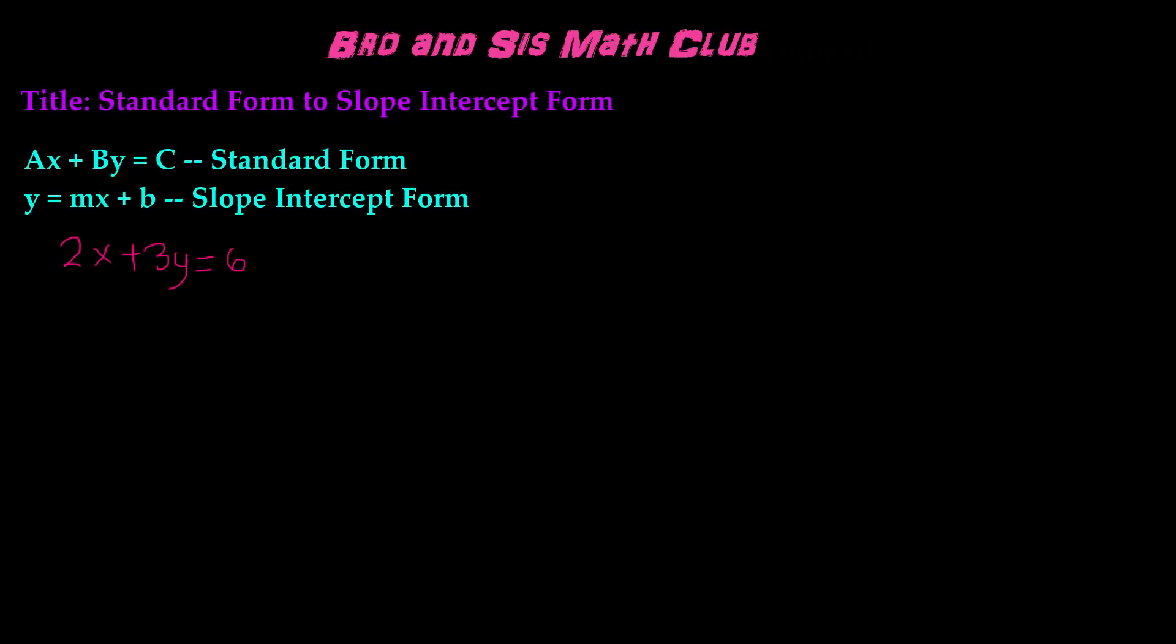In order to change the standard form equation to slope-intercept form, we're looking for y, because slope-intercept form is y equals mx plus b. So in this equation, we're solving for the variable y. That means we have to get rid of the x. We're going to use inverse operations and subtract 2x on both sides. The positive and negative 2x cancel each other out, and we're left with 3y equals 6 minus 2x.